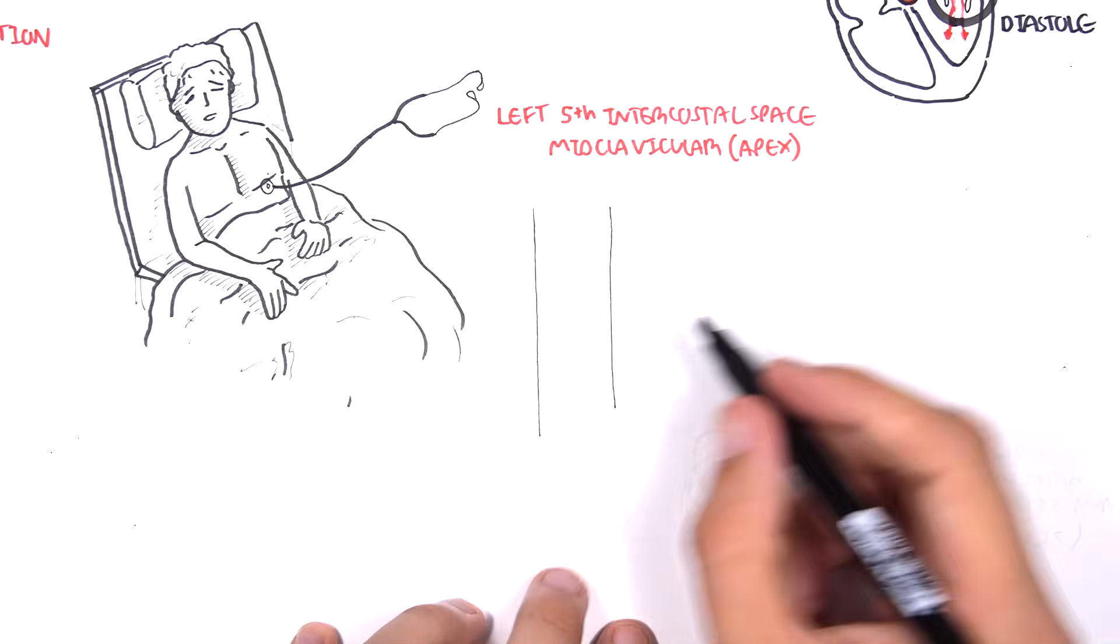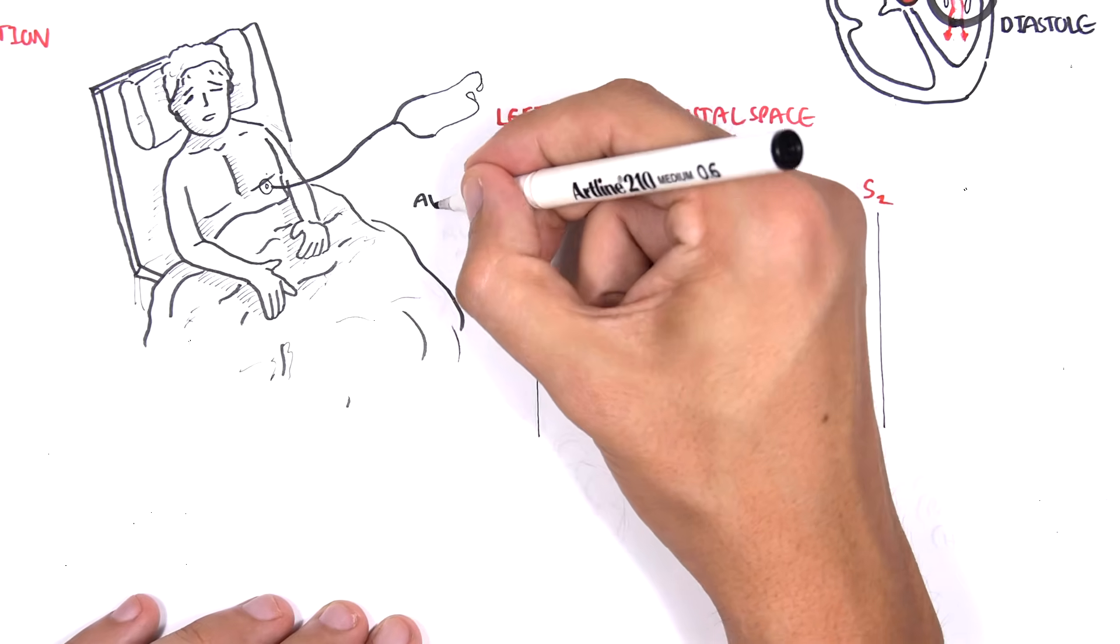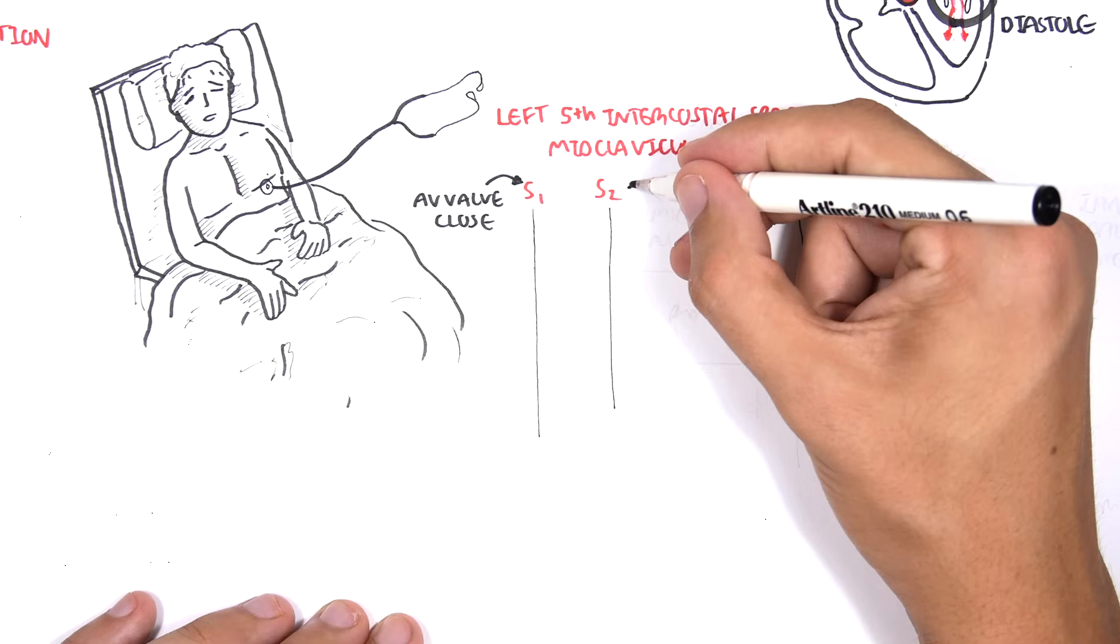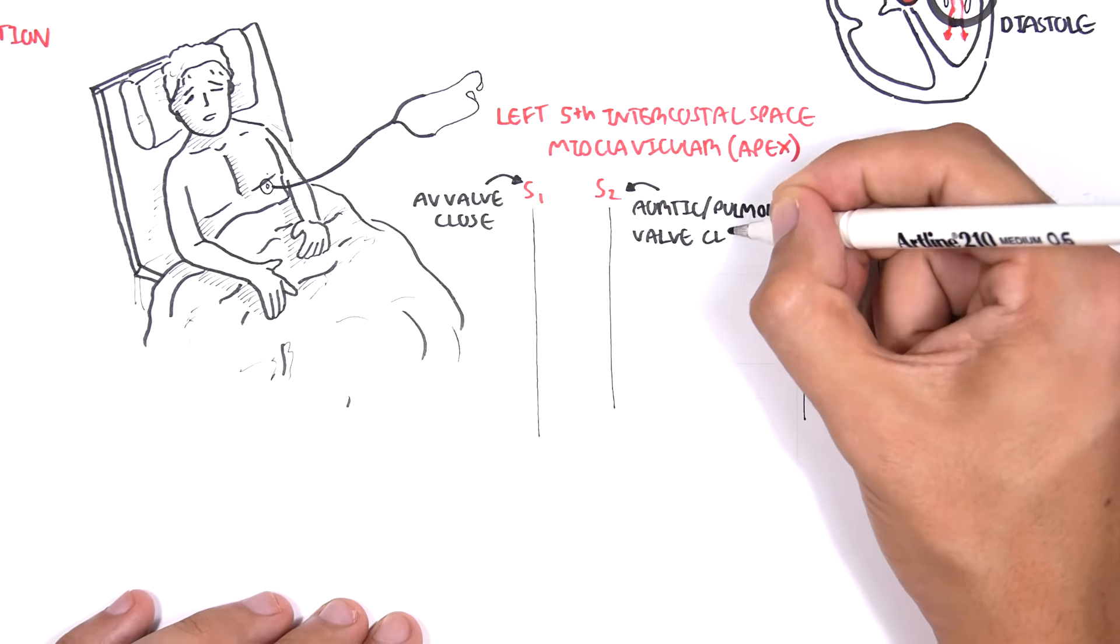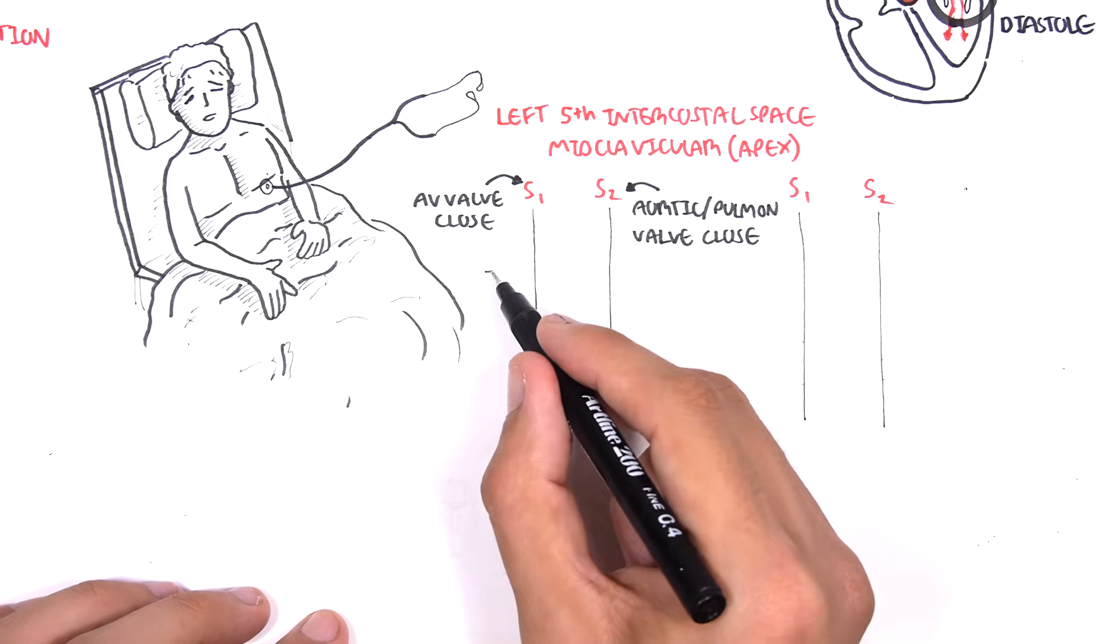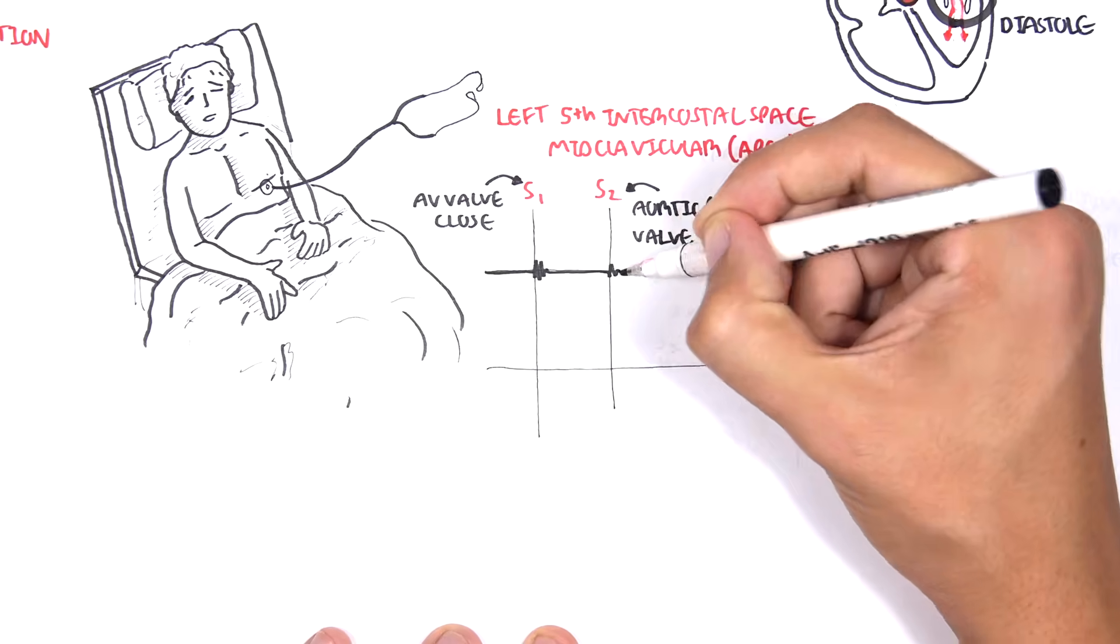We normally can hear two heart sounds, S1 and S2. S1 correlates with your atrioventricular valves closing, which are your tricuspid and mitral valves closing. And S2 is when your aortic and pulmonary valves close. We have a first heart sound, S1, and a second heart sound, S2.